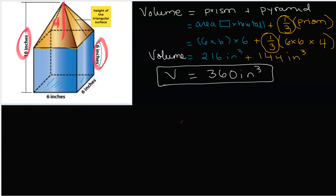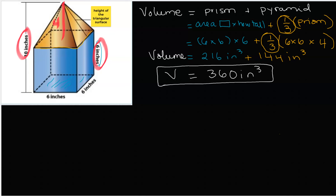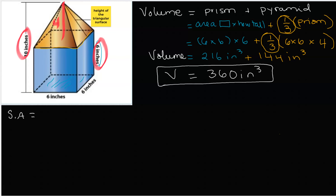Now, how do we find the surface area? The surface area is the area of all the surfaces. Looking at this shape, we have yellow surfaces and blue surfaces. For the blue part, the bottom is six by six, and the sides are six by six also — it's actually a cube on the bottom. There is no top on that cube, so there are five blue surfaces.